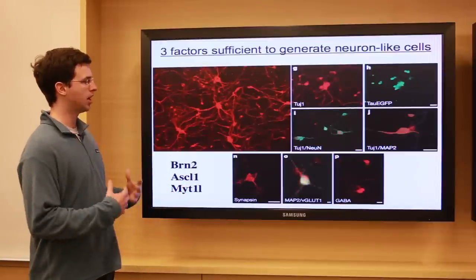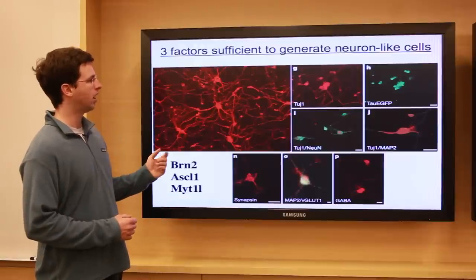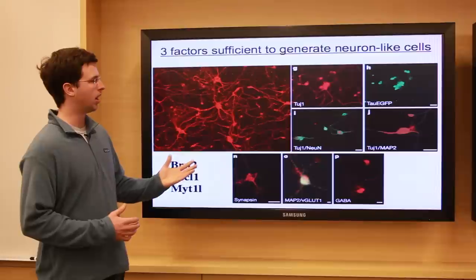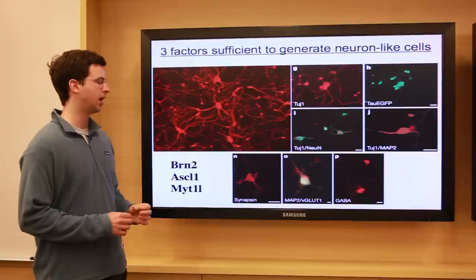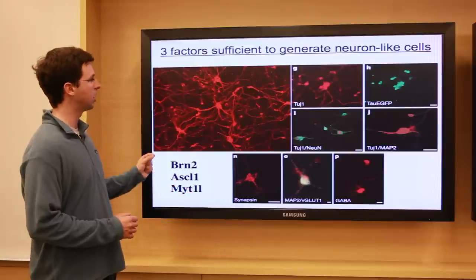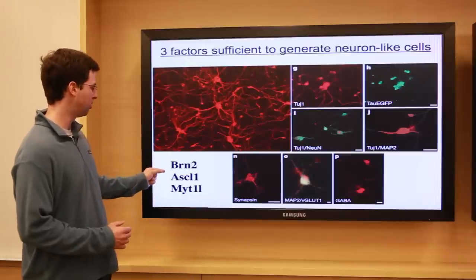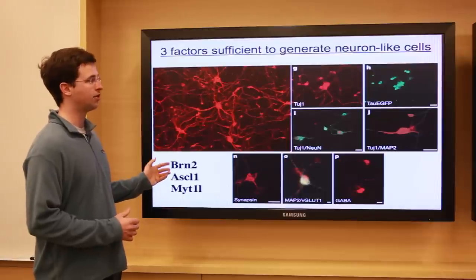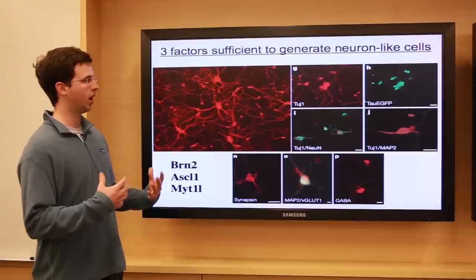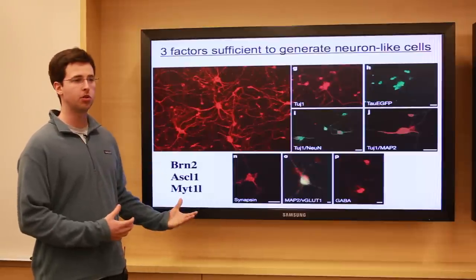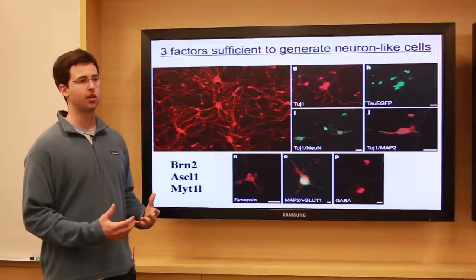The cells looked like neurons, so we asked: do they also express other neuron-specific genes? We found that they do express a variety of pan-neuronal-specific proteins and even more mature markers such as synapsin and VGLUT1. We ultimately identified three specific genes — BRAIN2, ASL1, and MYT1L — that are sufficient to reprogram fibroblasts into the neuronal state. These cells seem to look like neurons and express the right proteins, but a key aspect of whether they're really neurons is whether they have the functional properties of neurons.